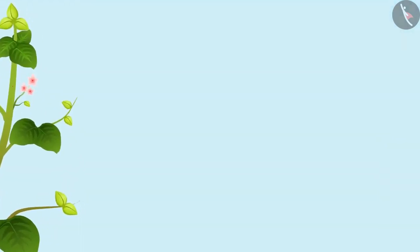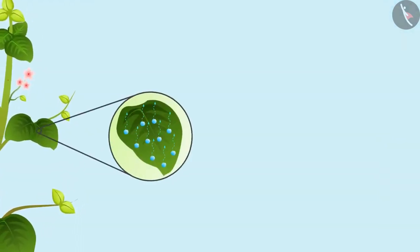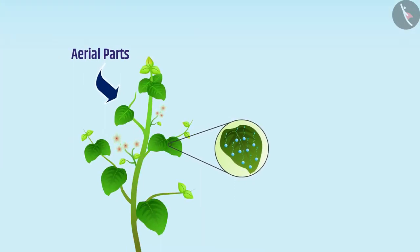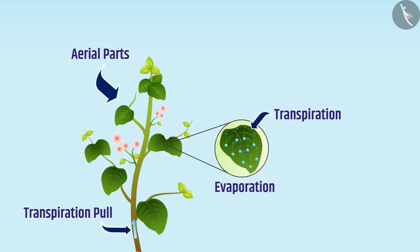Similarly, there is loss of water in the form of vapor from the aerial parts of the plant, which is called transpiration. This evaporation creates a suction called transpiration pull, due to which water gets pulled upward and can reach various parts of the plant. Transpiration also regulates plant temperature.